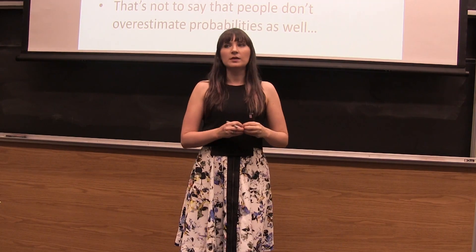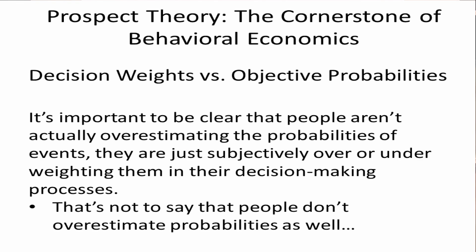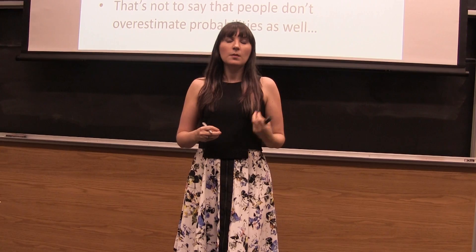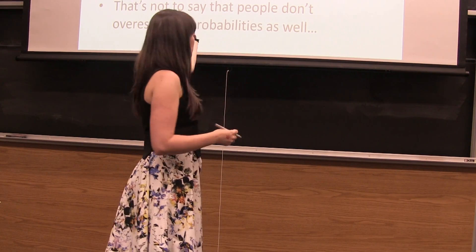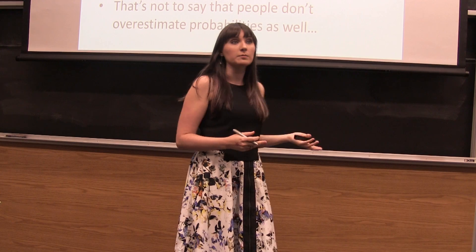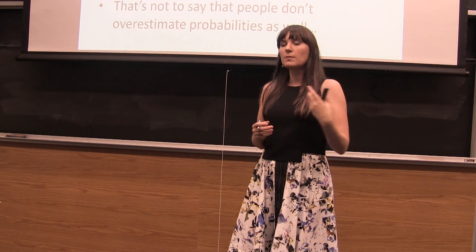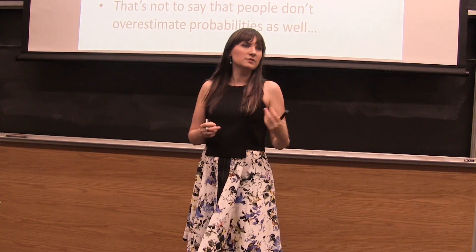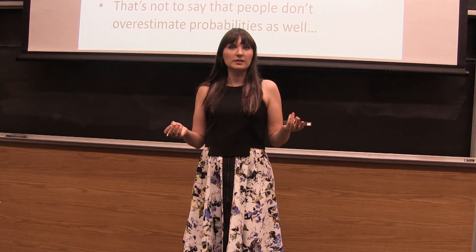What we're describing here is that second one — that I know what the objective probability is, but I'm not perceiving it in an objective way. But it's important to keep in mind that people could actually be making both of these errors at the same time, which would obviously just compound the deviation from rationality.